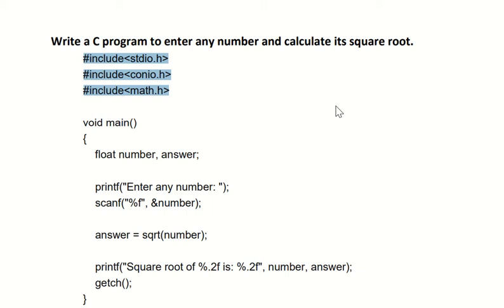After that, we have void main function. We have used two variables and both variables are of data type float. The first one is number and the second one is answer. We use number because initially we are going to ask the user to enter any number.